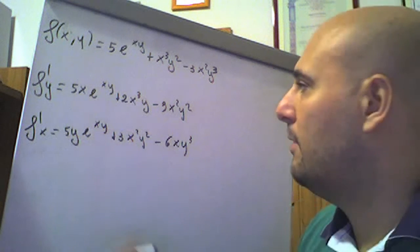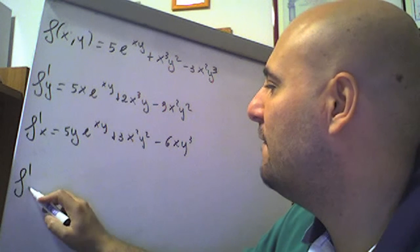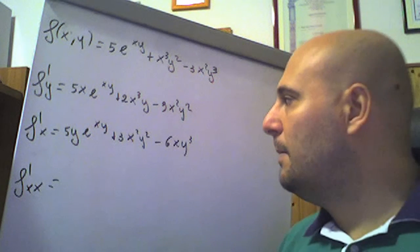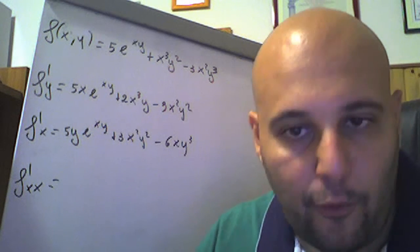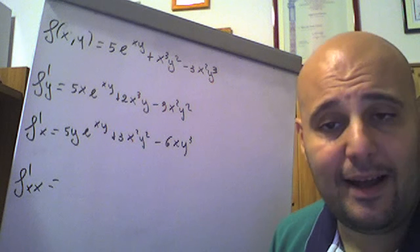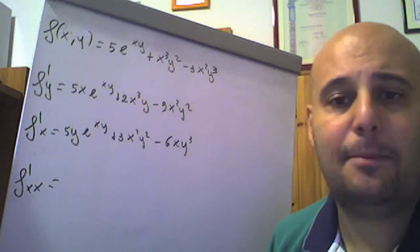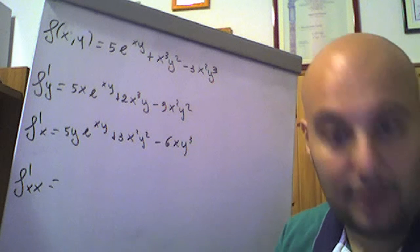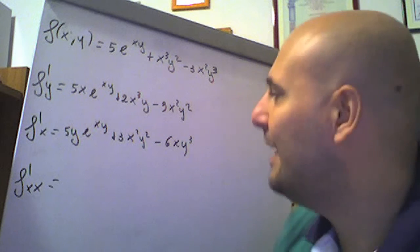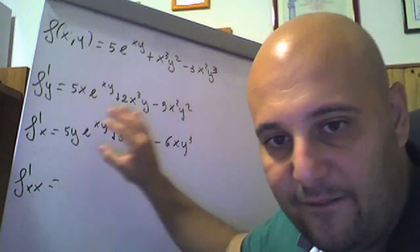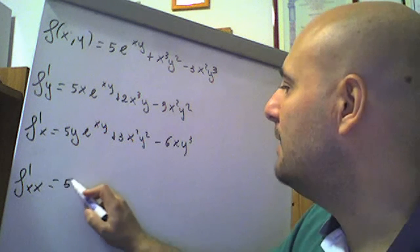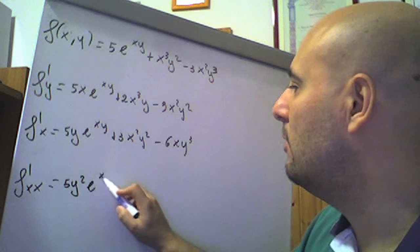Deriviamo la seconda volta: 4 ne dobbiamo fare, cominciamo con la derivata parziale della f rispetto ad x fatta ancora rispetto ad x. Attenzione che 5y·e^(xy): non dobbiamo fare la derivata di un prodotto perché 5y è una costante che rimane fuori. Dobbiamo nuovamente derivare e alla xy rispetto ad x, e la derivata è e alla f per f', quindi e alla xy per y. Quindi 5y·y·e^(xy) dà un 5y²·e^(xy).